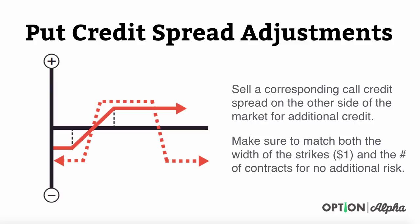What we always say is you add the corresponding call credit side, make sure that you match up both the width of the strikes — so in this case if you are doing a dollar-wide strike, you want to do a dollar-wide call credit spread — and the number of contracts you are trading, for no additional risk. And that's really, really important.